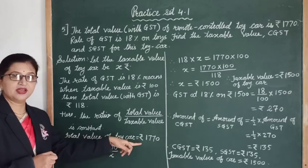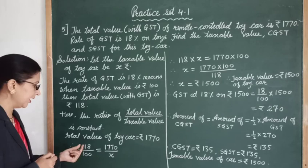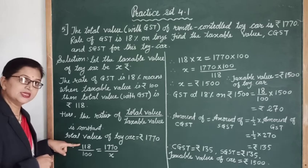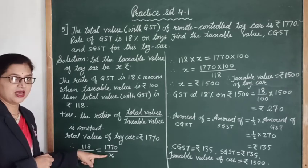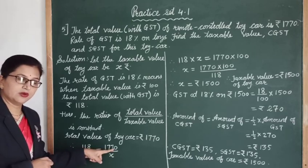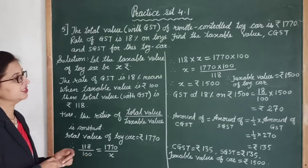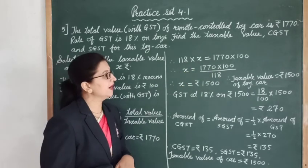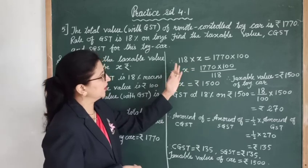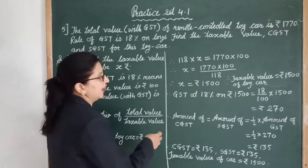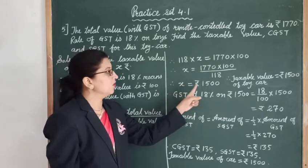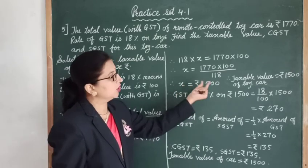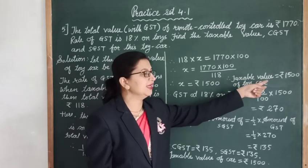The total value of the toy car is given as 1770 rupees. A 100-rupee car costs 118 rupees with GST, so an x-rupee car costs 1770 rupees. By cross multiplication: 118 × x = 1770 × 100. Solving for x, we get x = 1500. So the taxable value of the toy car is 1500 rupees.